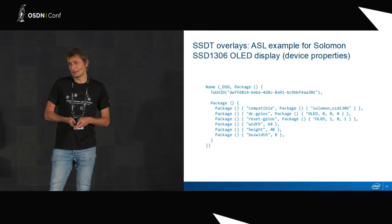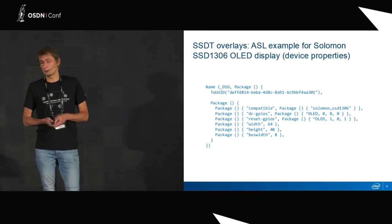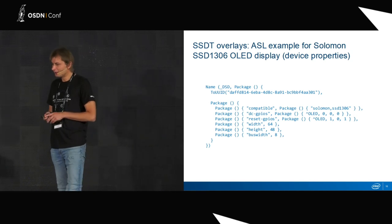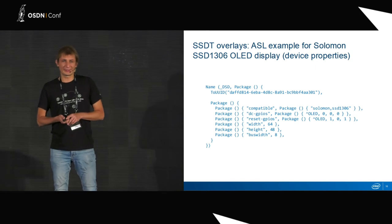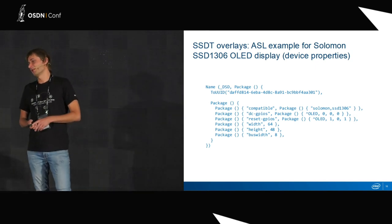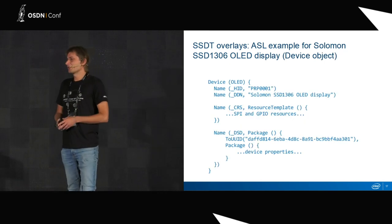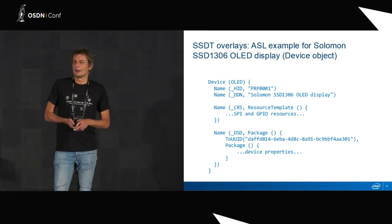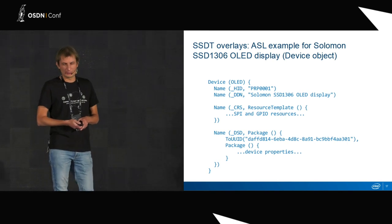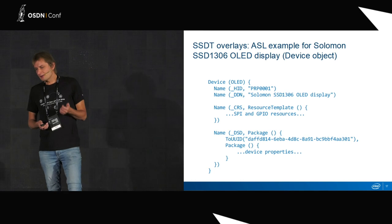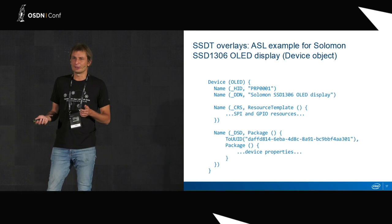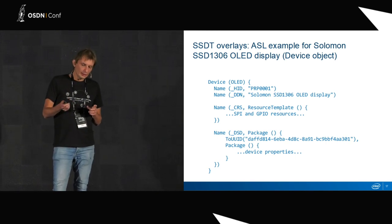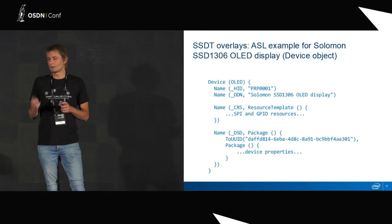Also, we need to describe for this device bus width and dimensions. On top of that, we need to provide a compatible string, because there is no registered ACPI ID for this device. It will reuse the compatible string. The special ACPI ID PRP0001 is provided — this ID tells the Linux kernel that this device needs to use a compatible string, and ACPI tries to match inside the driver against this compatible string instead of matching through the ID.